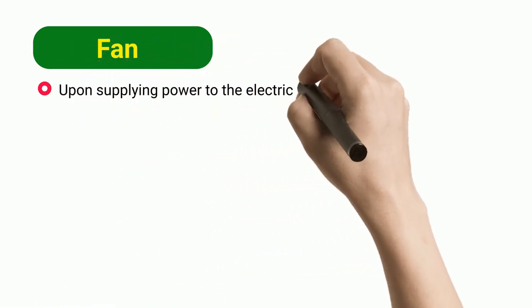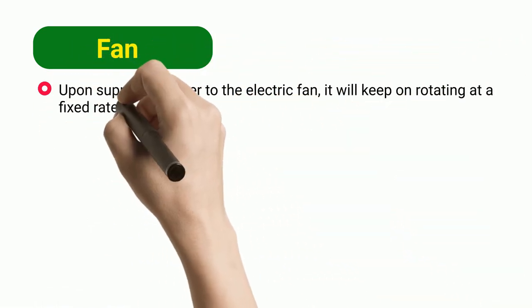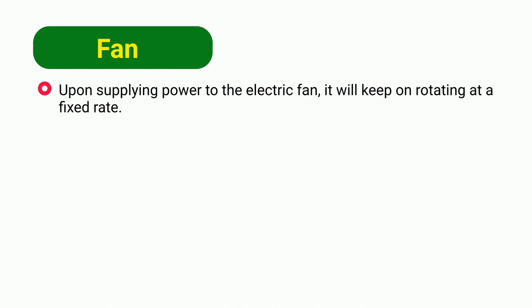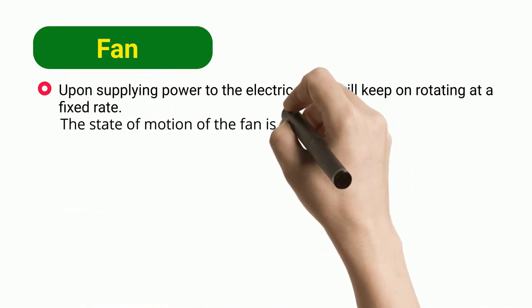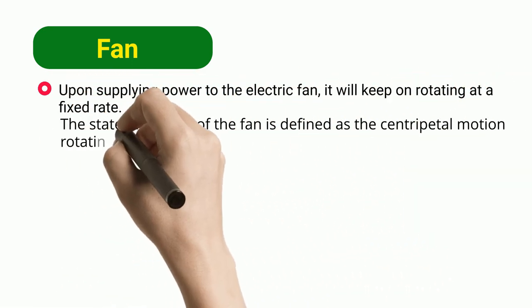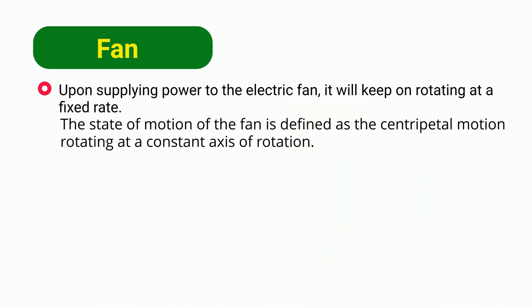Fan. Upon supplying power to the electric fan, it will keep on rotating at a fixed rate. The state of motion of the fan is defined as the centripetal motion rotating at a constant axis of rotation.